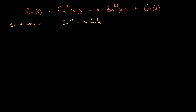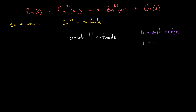Once you've figured out which is the anode and which is the cathode, the cell notation takes this form: the anode is written on the left by default, then a double line in the middle, and the cathode is written on the right. The double lines represent the salt bridge. We use a single line to represent a phase boundary — for example, when you have a solid on one side and an aqueous species on the other.